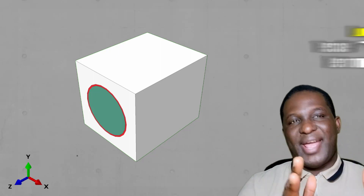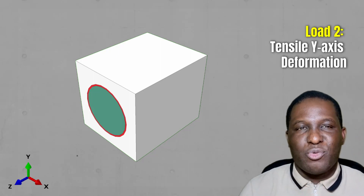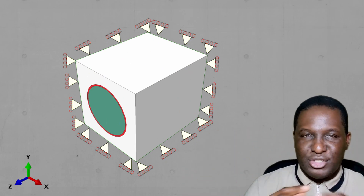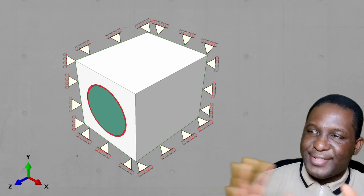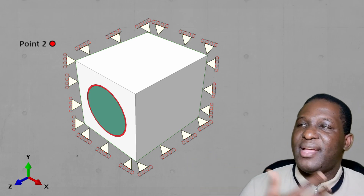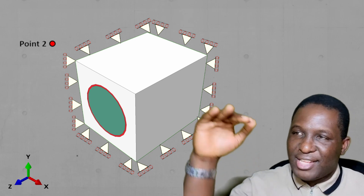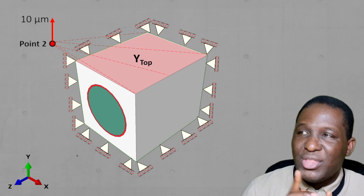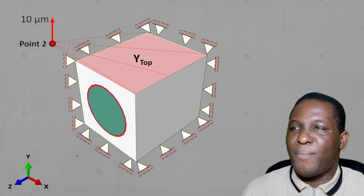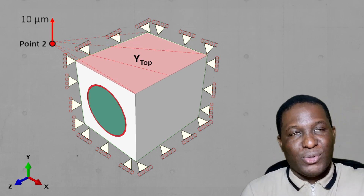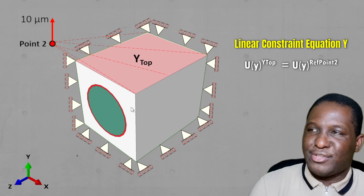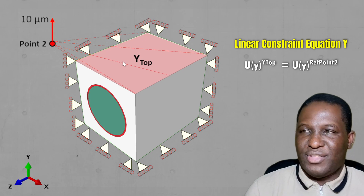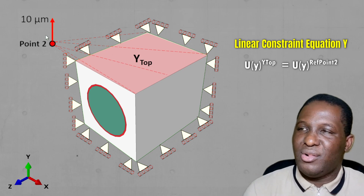For loading in the y-direction, the same approach applies. We apply boundary conditions in all three dimensions and leave the open faces. A different reference point — reference point 2 — is placed near the top end, and a 10 micron load is applied in the y-axis to push the system up. A kinematic linear constraint links what's happening at reference point 2 to everything at the top face.